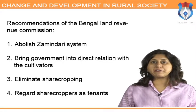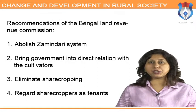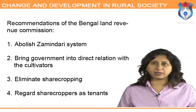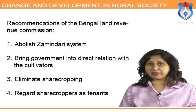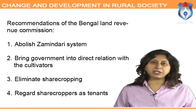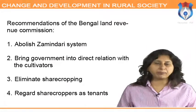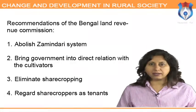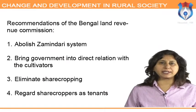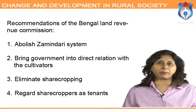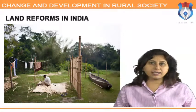The Bengal Land Revenue Commission was set up under the chairmanship of Sir Francis Rond in 1939, which is a landmark in the abolition of the zamindari system. Its major recommendations were to abolish the zamindari system, bring the government into direct relation with actual cultivators by acquiring superior interest in agricultural land, eliminate sharecropping, and regard sharecroppers as tenants with definite rights on the property.